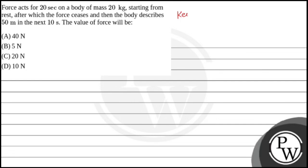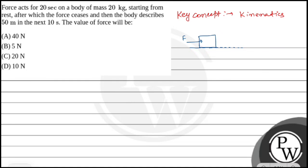So the key concept here is kinematics. In this question, there is a body of mass 20 kg that accelerates for 20 seconds. So at T equal to 0 seconds and at T equal to 20 seconds, the force is ceased and the body has achieved some final velocity. Let's denote that as V.